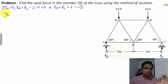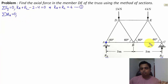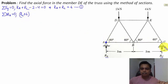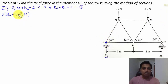Moment about point A equals zero. Starting with RC: force RC multiplied by perpendicular distance AC, which is 6 meters — so RC times 6. RC produces an anti-clockwise moment at A, and we take anti-clockwise moments as positive. Next we have the 2 kN force.